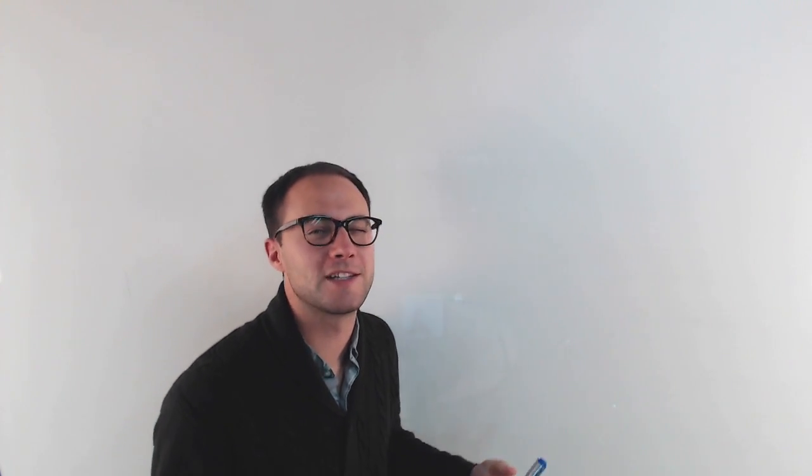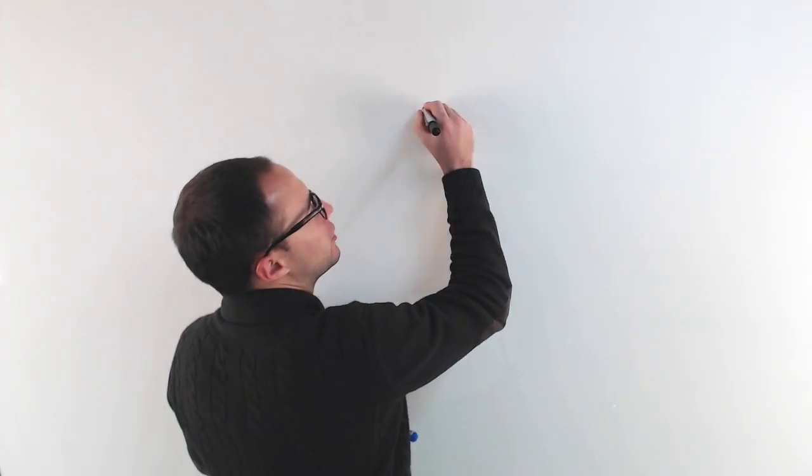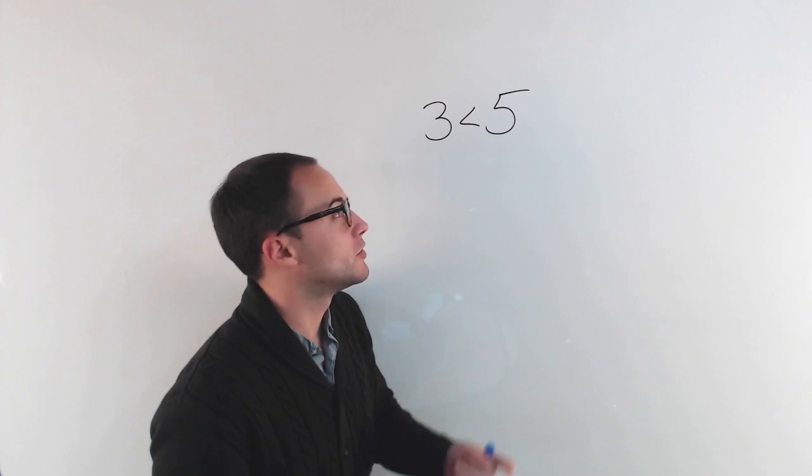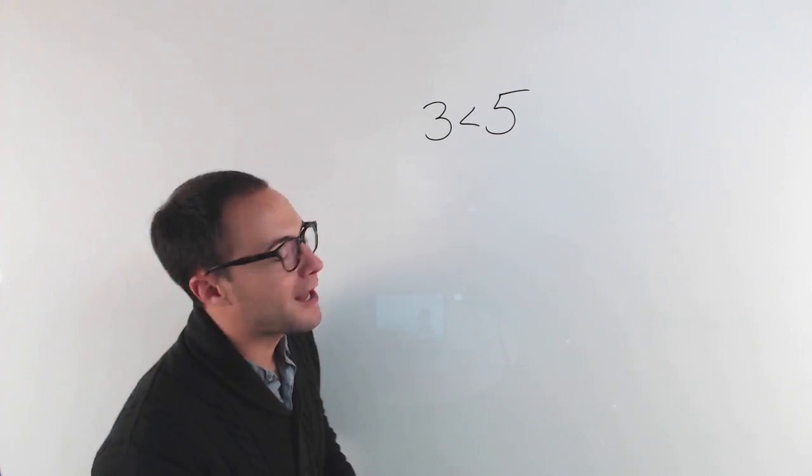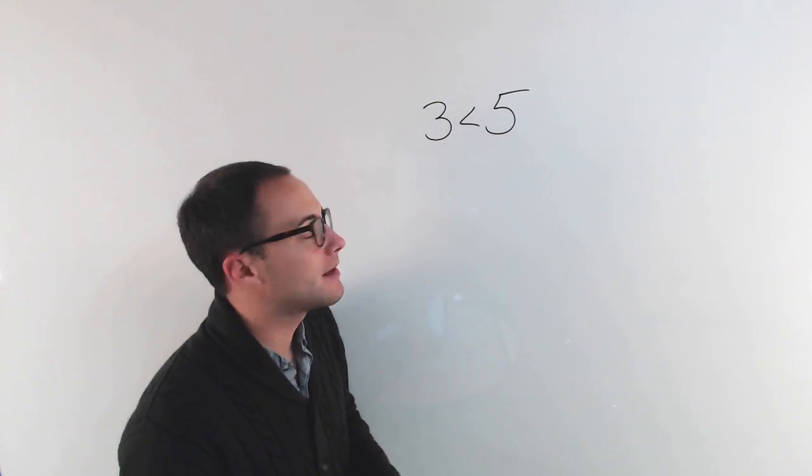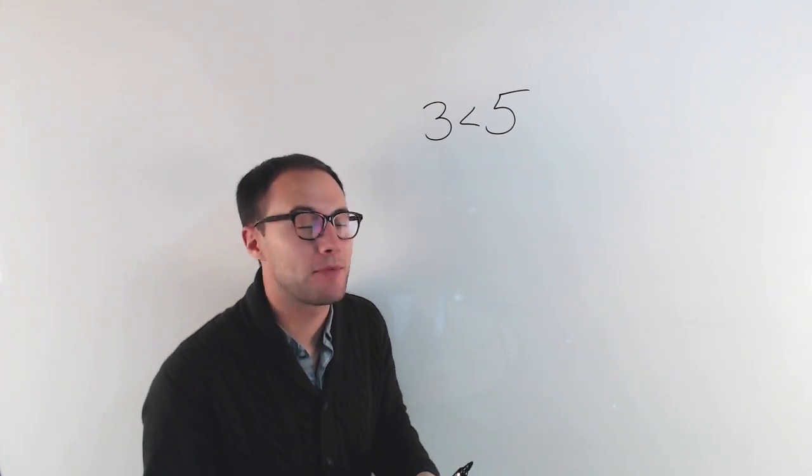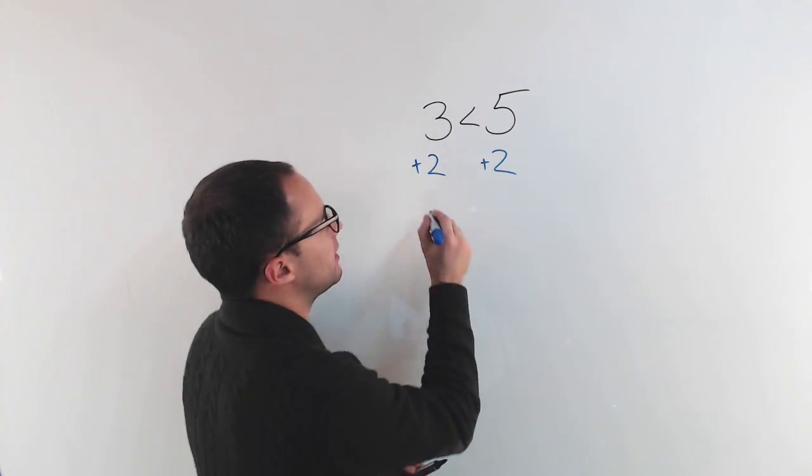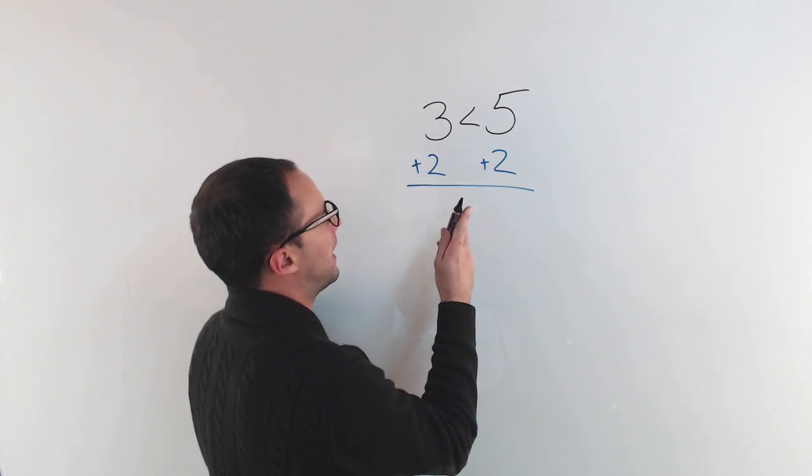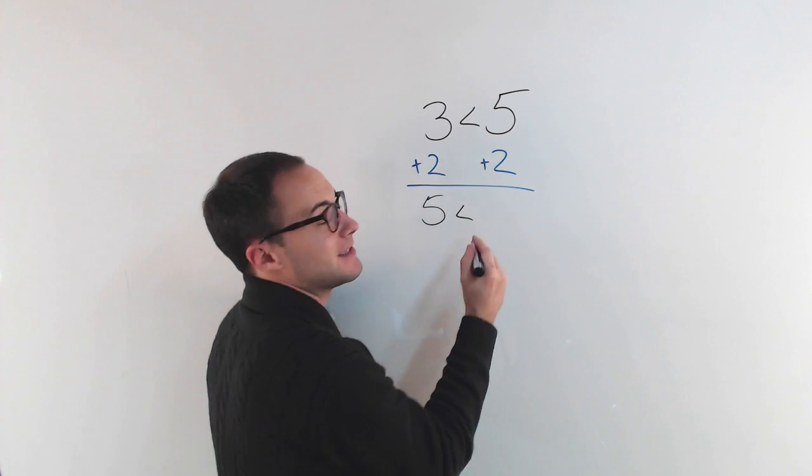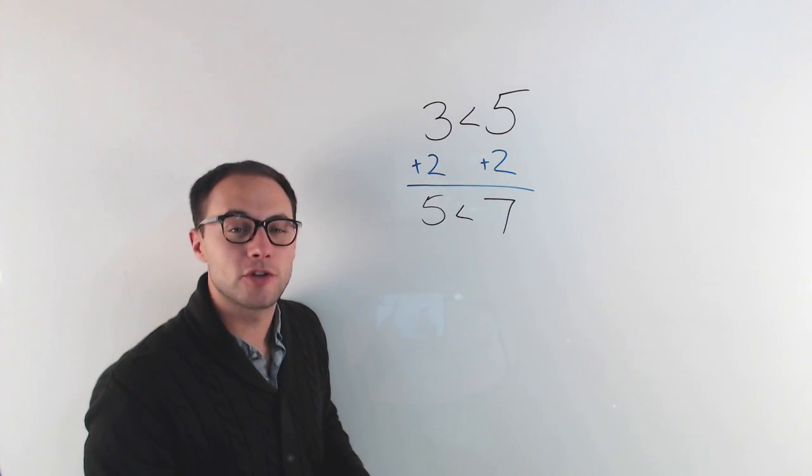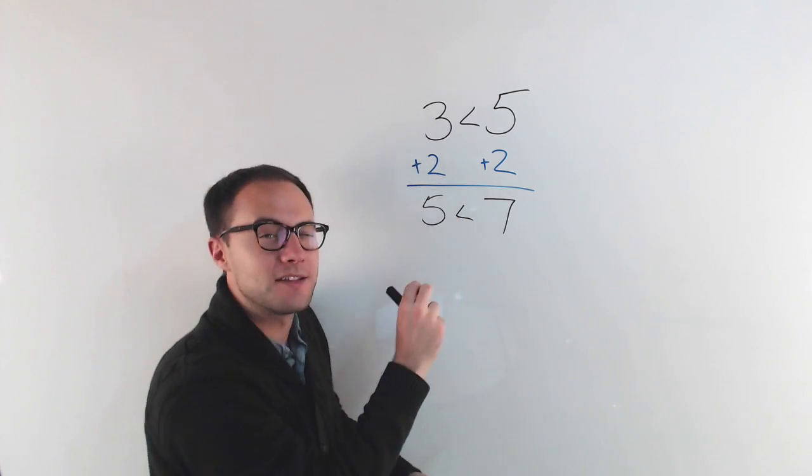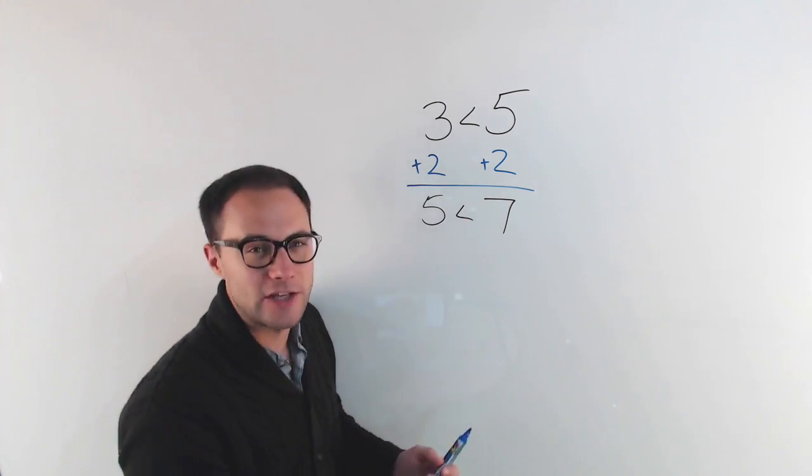All right, before we get to an example, let's do a little experiment. So if I have an inequality, 3 is less than 5, well of course that's true. Now what happens if I add something to both sides? The same thing. Let's say I add 2 to both sides of that inequality. Well, then I would get 5 is less than 7. Is that still true? Well yeah, 5 is less than 7, right? So that's still true. After adding the same thing to both sides of an inequality, it stayed true.